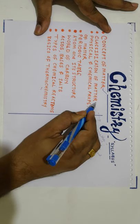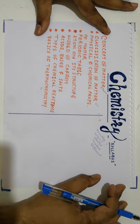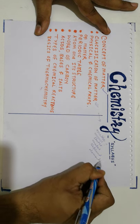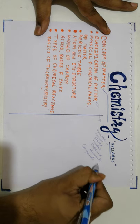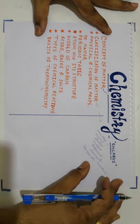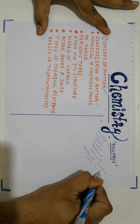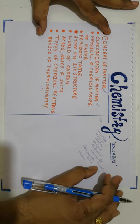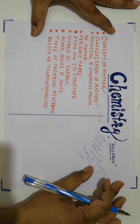Followed by the second chapter — classification of matter. In this chapter we are going to classify matter into various segments. For example, matter can be classified into elements, compounds, or mixtures. Or it can be solid, liquid, or gas. It can be a metal or a non-metal. All these things are required to study the classification of matter.